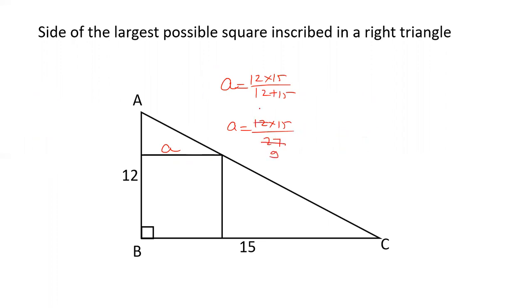3 is cancelled out, 3 fours are 12, 3 nines are 27, 3 threes are 9, 3 fives are 15. The side is 20 by 3.